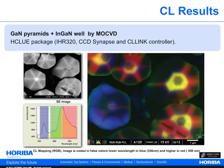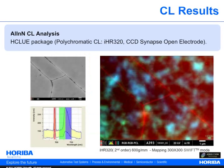The first example shows the cathodoluminescence mapping of gallium nitride pyramids and an indium gallium nitride quantum well. The image is obtained using the hyperspectral mapping capability of the H-CLU. The top left image shows the SEM image, and the image below illustrates the software capability allowing the user to select a spectral region which can then be viewed on the mapping image. For example, the blue region corresponds to the band gap of the gallium nitride.